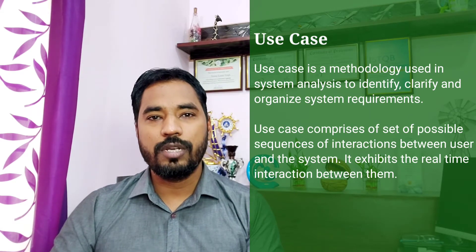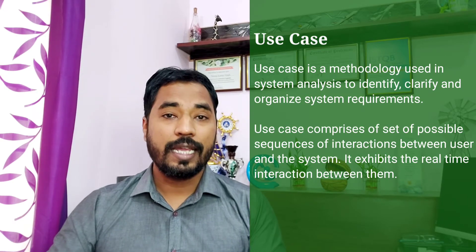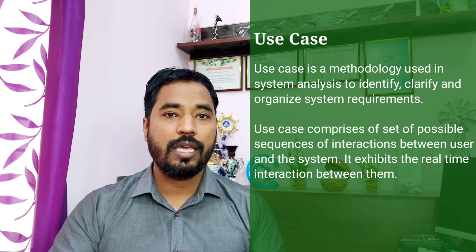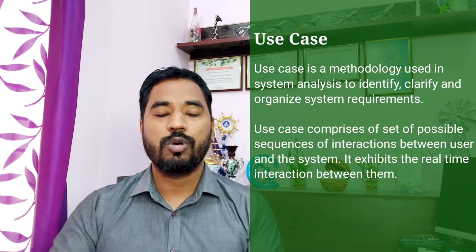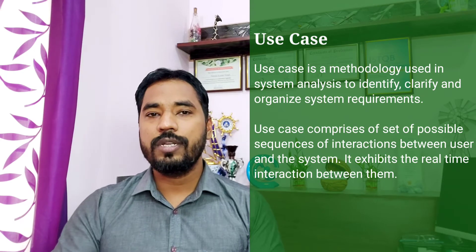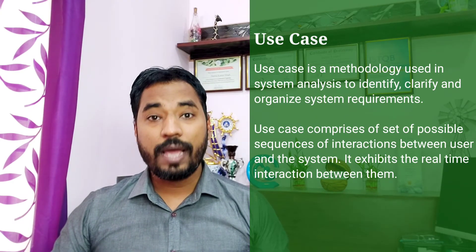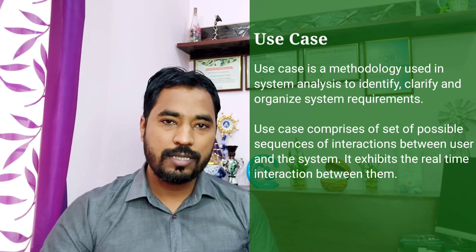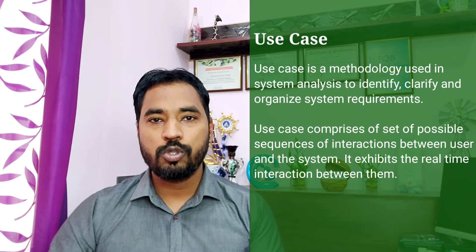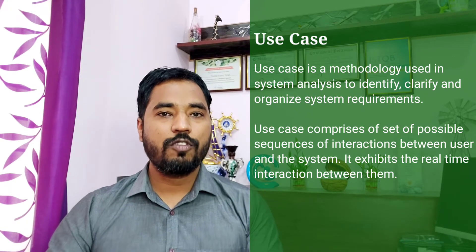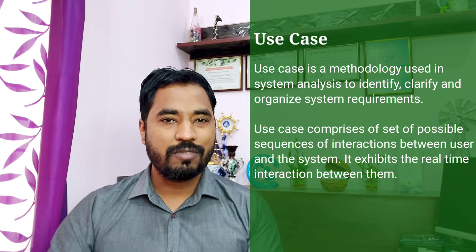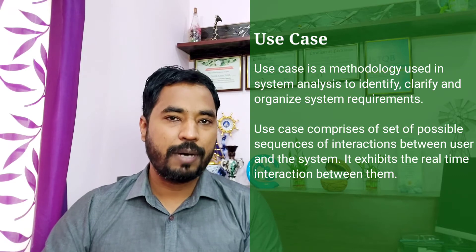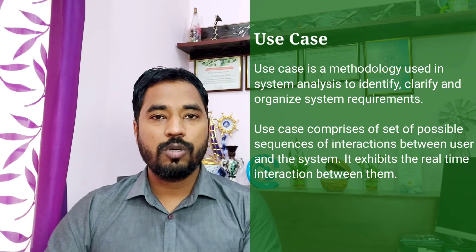A use case generally should have only one main path. For example, if I'm talking about an ATM software with different options like withdrawing money, getting a mini statement, or getting a balance inquiry — one use case only talks about one particular main path. This is because when a user interacts with the system, the menu shows many options but the user will select only one. So when a use case is created, it should have only one main path, while all other alternatives must be clearly identified.